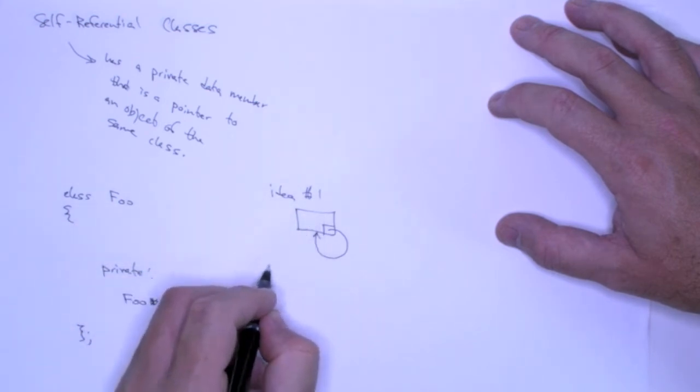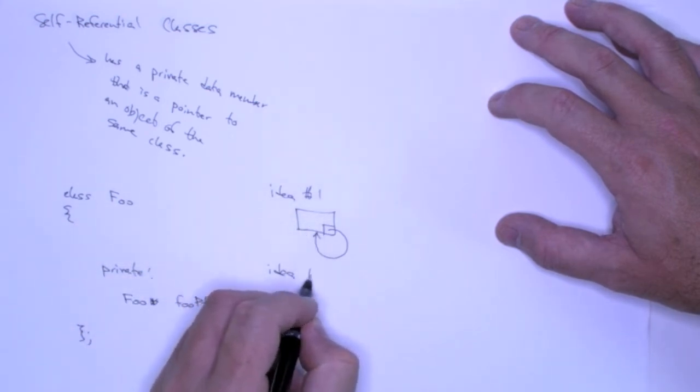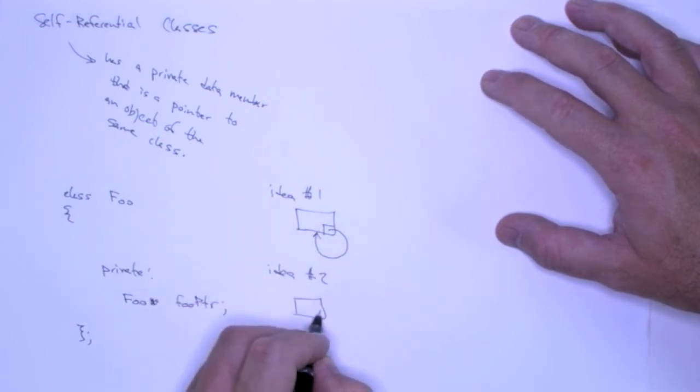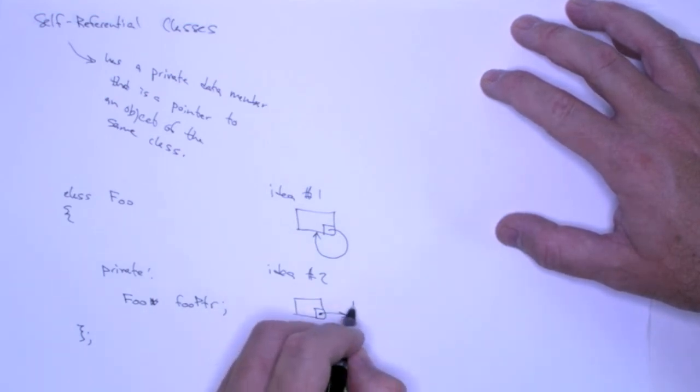But here's idea number two. And instead of just, it doesn't have to be the same foo object. What I can do is I can create a foo object. And it doesn't have to point to this one. What if I create another one? What if I create another foo object and make this pointer point to it?